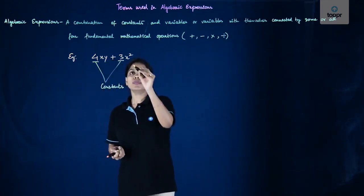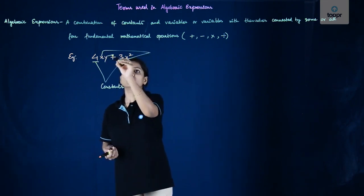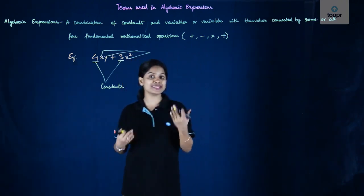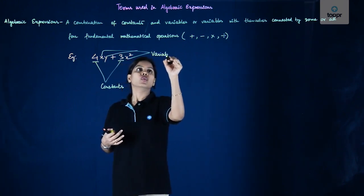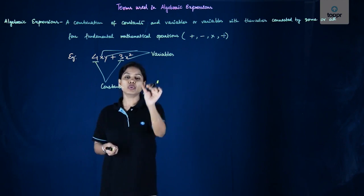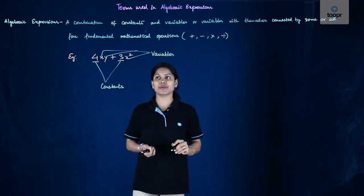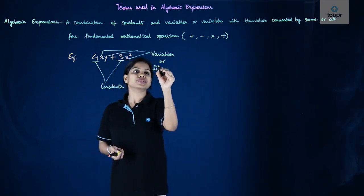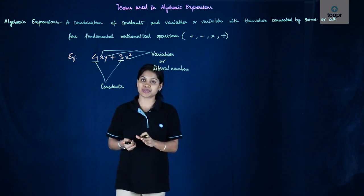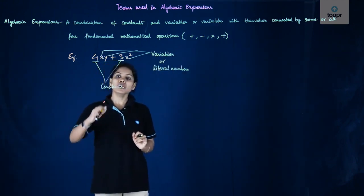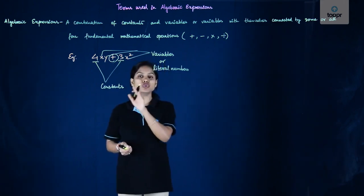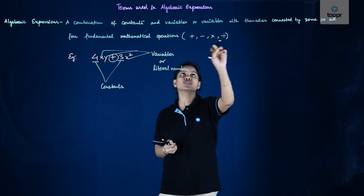Similarly, x and y — what about x and y? x and y could be anything like we just discussed. So what we call them is a variable — their value will vary and their value doesn't remain the same. So variables are quantities whose value changes. Since the value changes, we denote them by letters like x and y. These are also called literal numbers — letters that are used to denote any variable. The constants and variables are connected together by these mathematical signs, as the definition talks about.